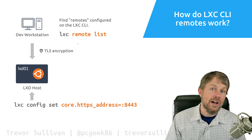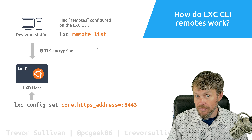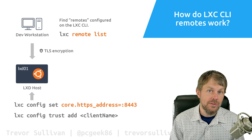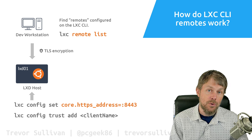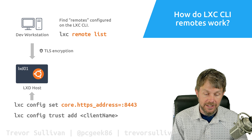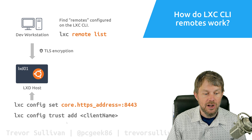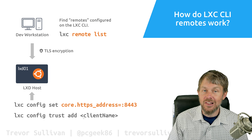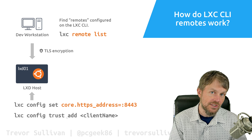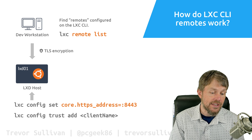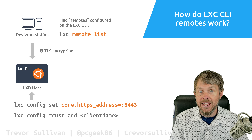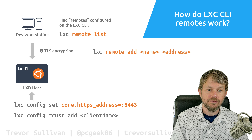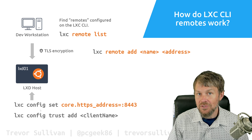You can configure it to run on a different port if you would like, but you'll have to remember that when you configure the remote on the LXC client side, you'll need to specify the correct network port. We also have to set up a trust relationship between the server and the client, so the server knows we are issuing commands from a trusted client. The way we do that is using the command `lxc config trust add`, and then specifying a client name when prompted.